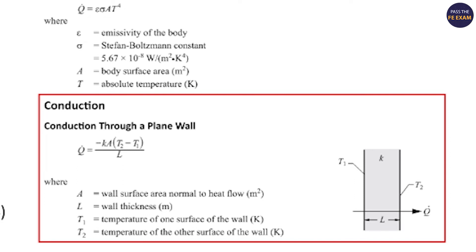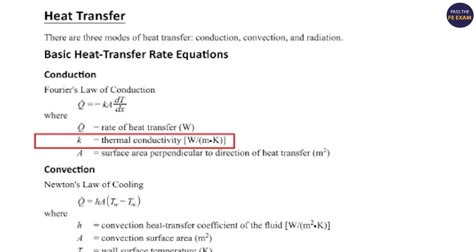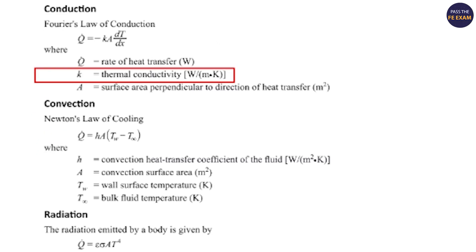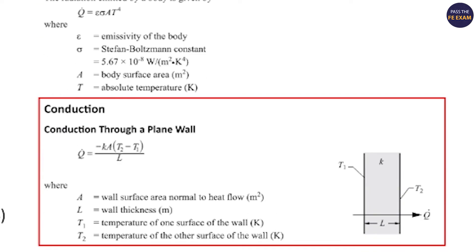Note that K, the thermal conductivity, is defined further up on the page. Q dot is equal to the rate of heat transfer in watts. K is equal to the thermal conductivity in watts per meter degrees Celsius. A is equal to the wall surface area normal to the heat flow in square meters. T sub 2 minus T sub 1 is equal to delta T, or the temperature difference in degrees Celsius. And L is equal to the wall thickness in meters.